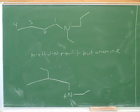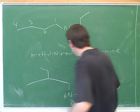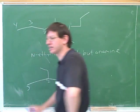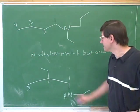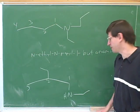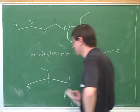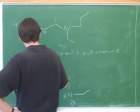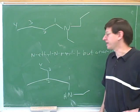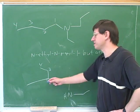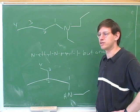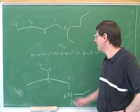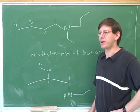I put an evil trap here. The trap is to trick people into thinking that this is the parent chain, but this is not the longest possible chain. We should pick the longest possible chain, and the longest possible chain is here. You can't assume that the horizontal is the longest chain. It's always a good idea to actually number your parent chain.